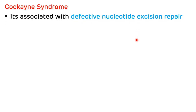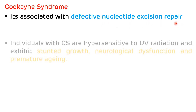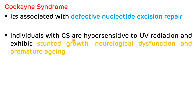Another syndrome associated with a defect in nucleotide excision repair is Cockayne syndrome. Individuals with Cockayne syndrome are hypersensitive to ultraviolet radiation and exhibit stunted growth, neurological dysfunction, and premature aging. So xeroderma pigmentosum and Cockayne syndrome are both conditions which occur due to defects in nucleotide excision repair.